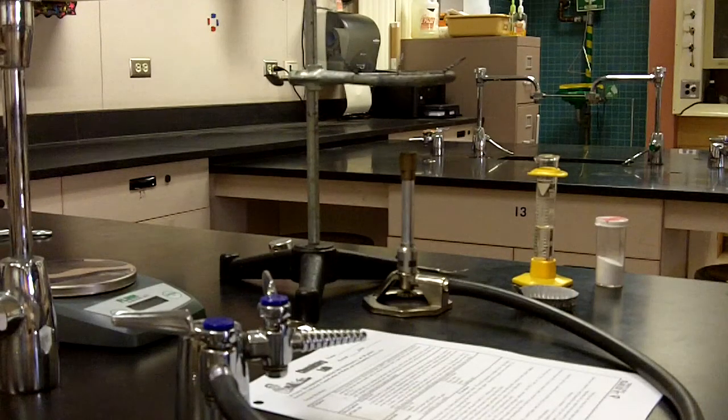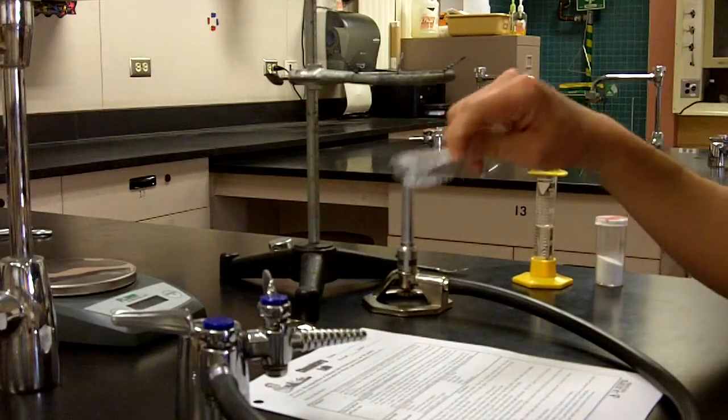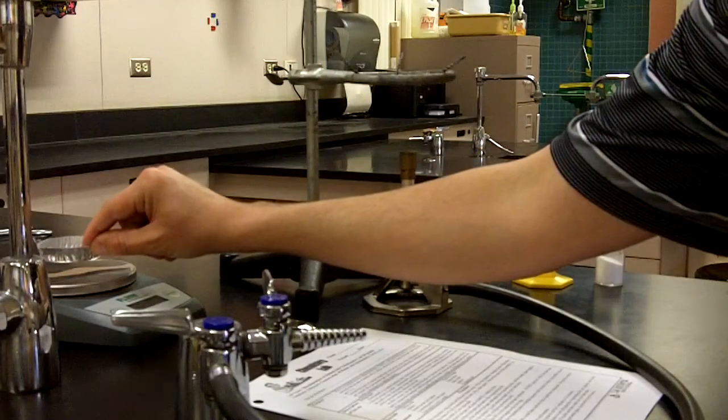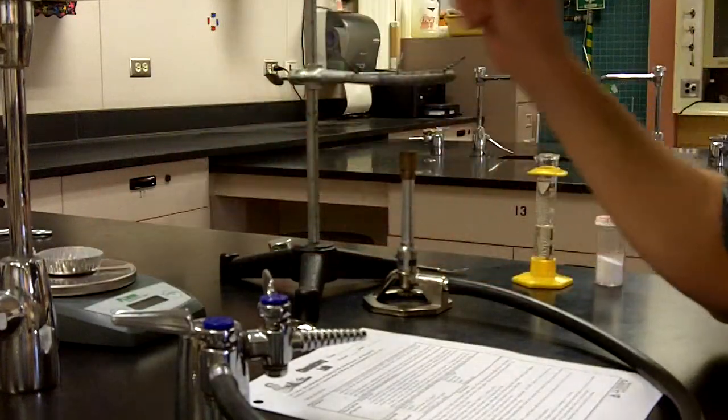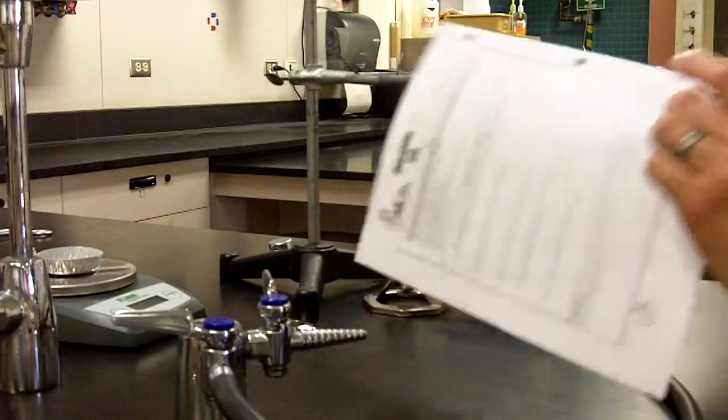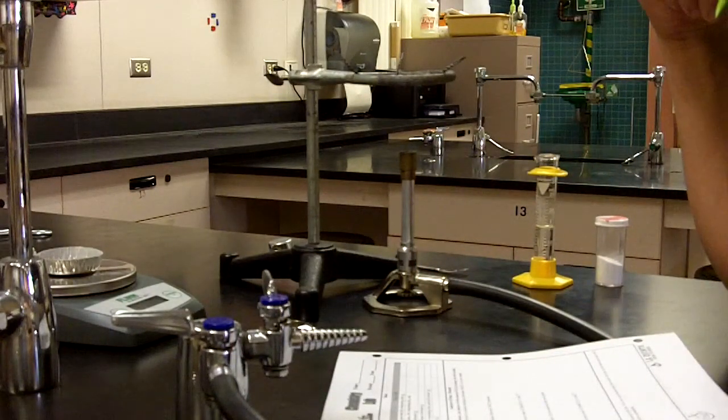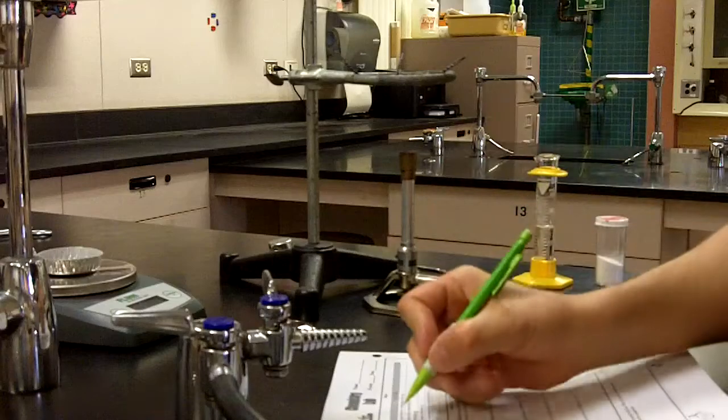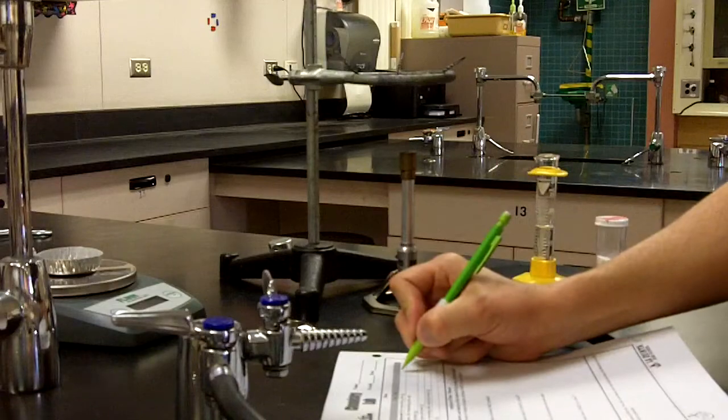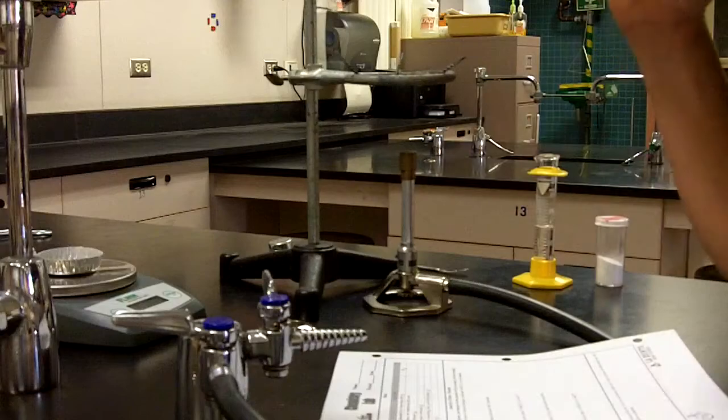We're just going to follow through with the procedure. First, we need to obtain the mass of the aluminum foil evaporating dish prior to getting the reactants in it. So I place it on the electronic balance that's been zeroed. The mass that I want to record is 1.4 grams. Turning the paper to the second side where it says mass of dry evaporating dish, we record 1.4 grams.